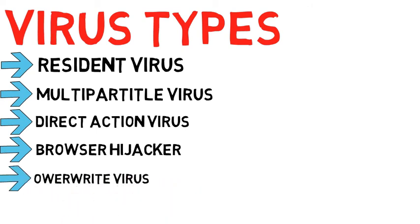Type 5: Overwrite virus. From the name itself, this virus overwrites the content of a file, losing the original content. It infects folders, files, and even programs. To delete this virus, you also need to get rid of the infected file. Thus, it is important to back up your data.